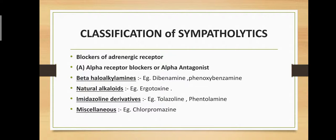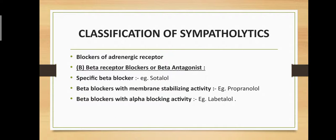Alpha receptor blockers have four main subtypes: first, beta-haloalkylamines, example dibenamine and phenoxybenzamine; second, natural alkaloids, example ergotoxin; third, imidazoline derivatives, example tolazoline and phentolamine; fourth, miscellaneous, example chlorpromazine. The second main type is beta receptor blockers, with subclasses: specific beta blockers, example sotalol; beta blockers with membrane stabilizing activity, example propranolol; and beta blockers with alpha blocking activity, example labetalol.